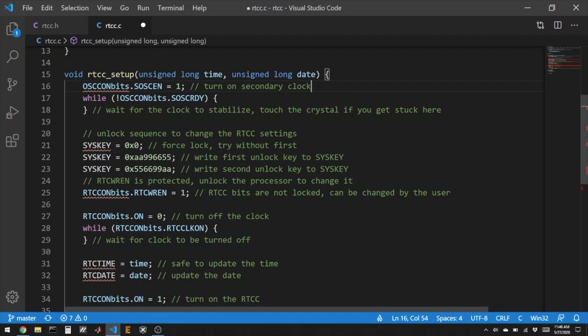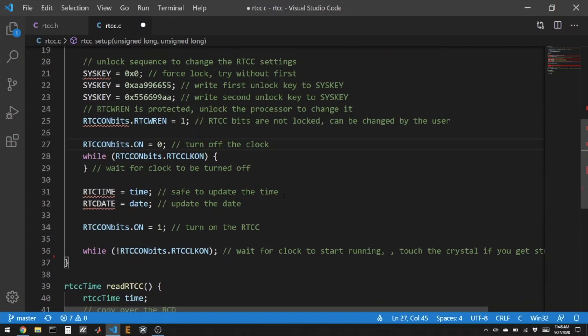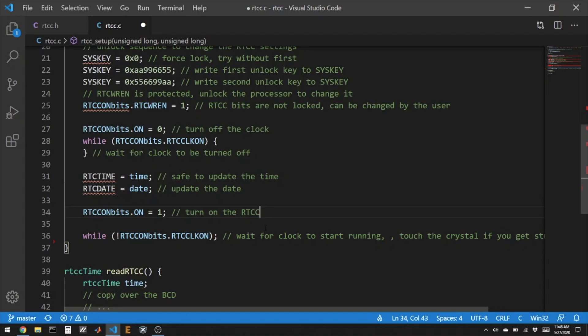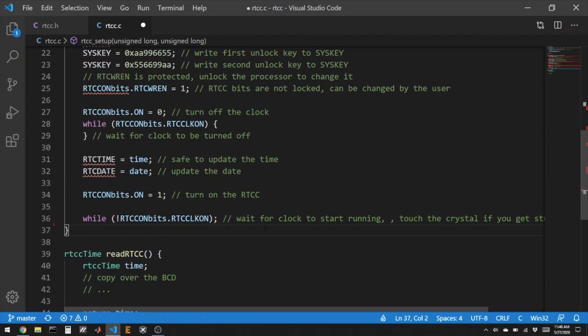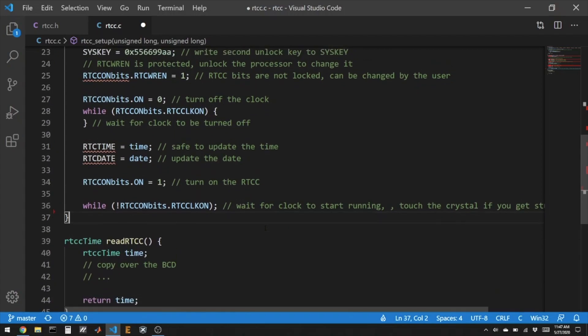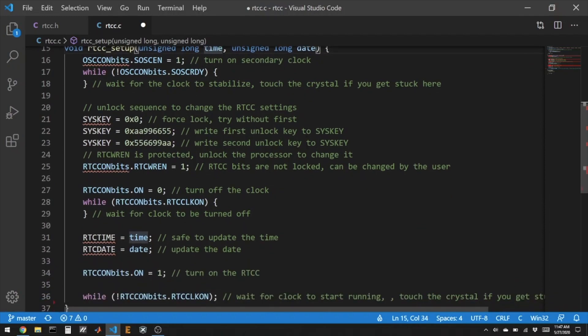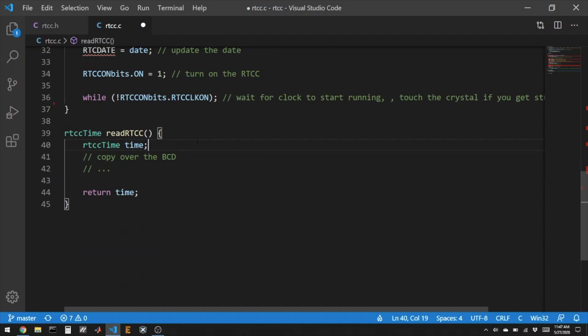So here's the setup function. The first thing we will do is we'll turn on the secondary clock and then we have to wait for it to be ready. Then to be allowed to change what time it is in RTCC we have to do something called an unlock sequence at the CPU. So we're going to change this value of syskey so we're going to make sure we're locked, then we will do this unlock sequence so that now we're allowed to change the right bit and now we are actually allowed to update the time. So now we will turn the clock off so we're not ticking. We can update the date and time and we'll turn the clock back on and we'll wait for everything to start rolling again. So when you call this you will have sent a date and a time and so now the clock will start counting, and then to read here's a blank function and you can figure out what you want to do here to figure out what time it is and return something of the structure RTCC time.